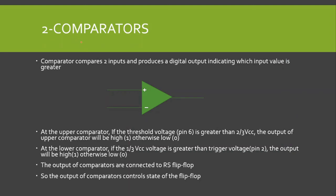Next are the two comparators. A comparator basically compares two inputs and produces a digital output indicating which input is greater. If the voltage at the positive terminal is greater than the voltage at the negative terminal, the output of the comparator is 1. Similarly, if the voltage at the positive terminal is less than the voltage at the negative terminal, the output of the comparator is 0.